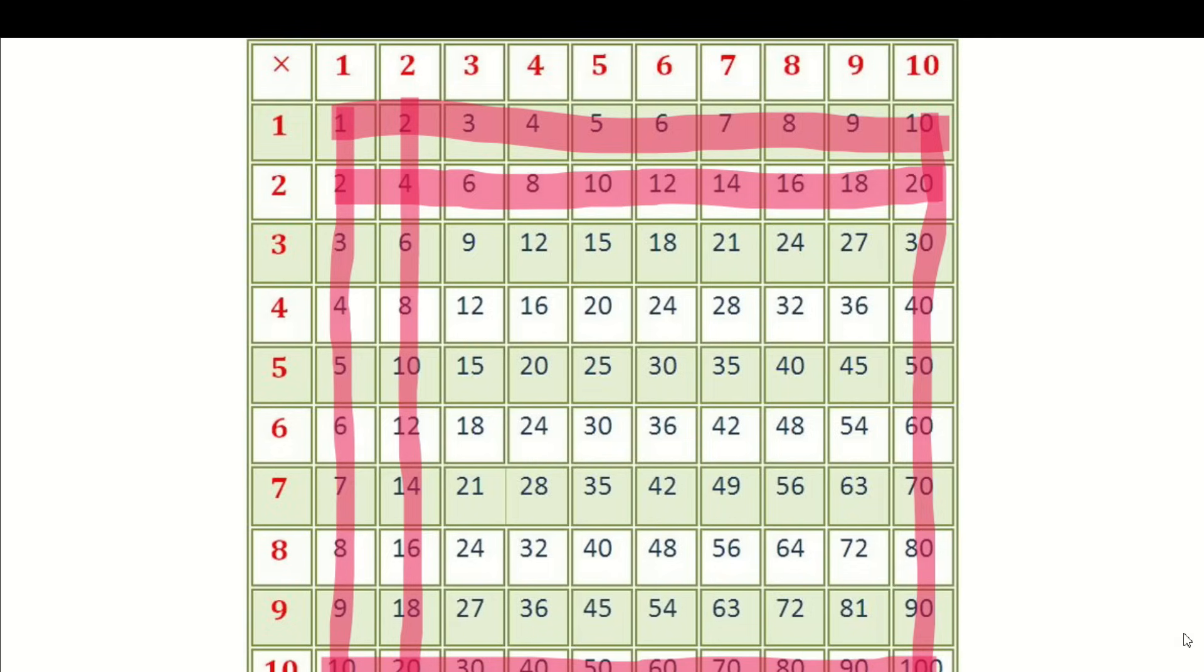After they really understand that two times four is four plus four, then have them count by twos. Two, four, six, eight, ten, twelve, fourteen, sixteen, eighteen, twenty. When they can count by twos and understand that two times five is five plus five, the twos are so easy to learn. So now we can cross off all of those.